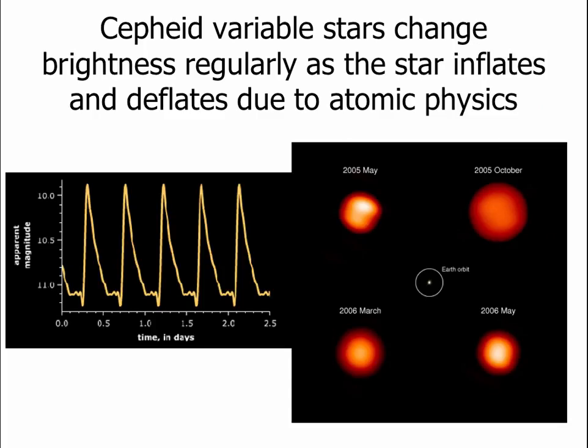One of the most famous and for us most crucial type of variable stars are Cepheid variable stars. They get this name because there's a star in the constellation Cepheus called Delta Cepheus, and it's the prototype for all of the stars that change their brightness like this. This is a pulsating star. The star inflates in size and then slowly deflates. As it inflates it cools off; as it deflates it heats back up. The combination of the growing and the shrinking and the changing temperature causes the star's brightness to change in a very regular pattern.